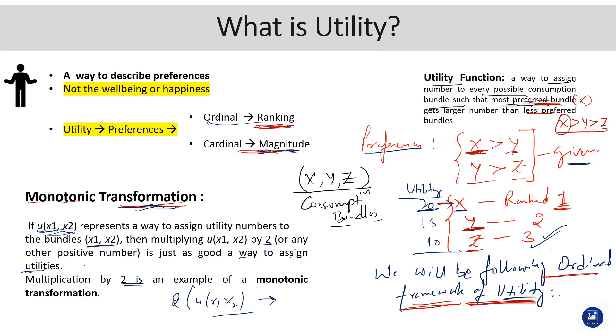This is what it's essentially trying to highlight. So this is what it implies: monotonic transformation will keep your preference ordering intact.